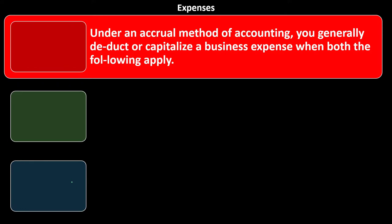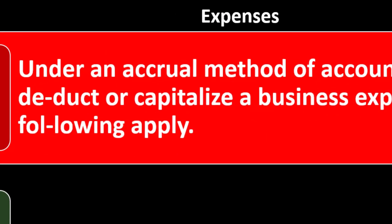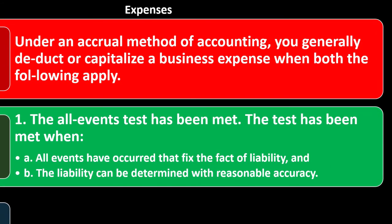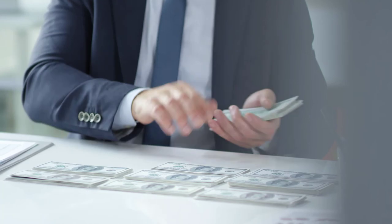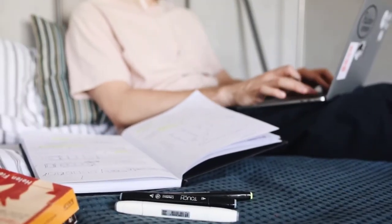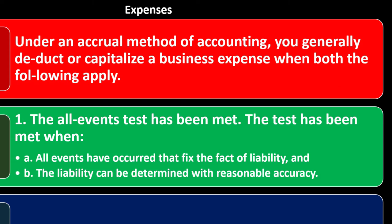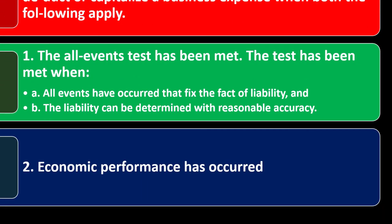Expenses under an accrual method of accounting: you generally deduct or capitalize a business expense when both of the following apply. One, the all-events test has been met — the test is met when: A) all events have occurred that fix the fact of a liability, and B) the liability can be determined with reasonable accuracy. So even if cash didn't go out — like you didn't pay for the expenses — you record them when you incurred them: when the work was essentially done by the other party, or if you received goods. Two, economic performance has occurred.